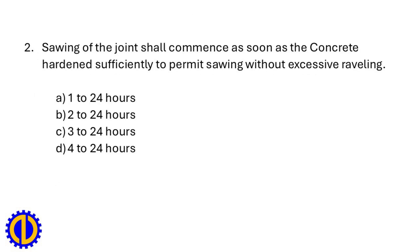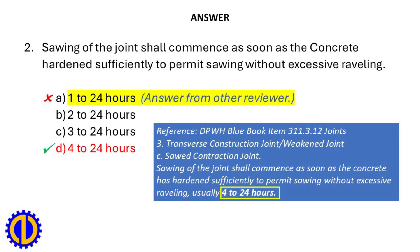Sawing of the joint shall commence as soon as the concrete hardens sufficiently to permit sawing without excessive raveling. a. 1–24 hours, b. 2–24 hours, c. 3–24 hours, d. 4–24 hours. Answer: d. 4–24 hours. Reference: DPWH Blue Book Item 311.3.12 Joints — sawing shall commence as soon as the concrete has hardened sufficiently, usually 4–24 hours.